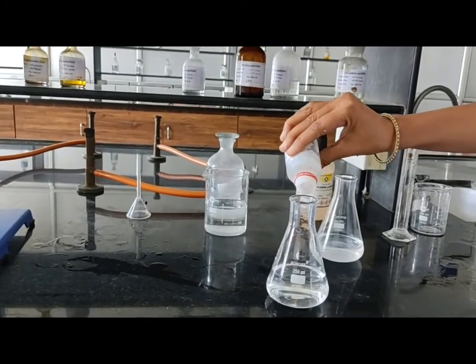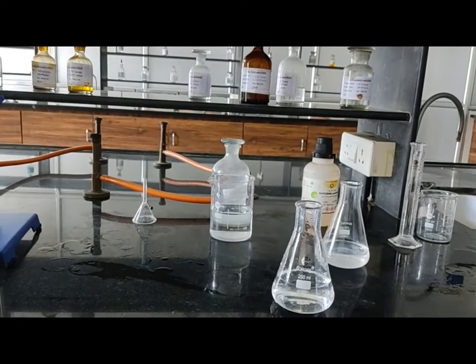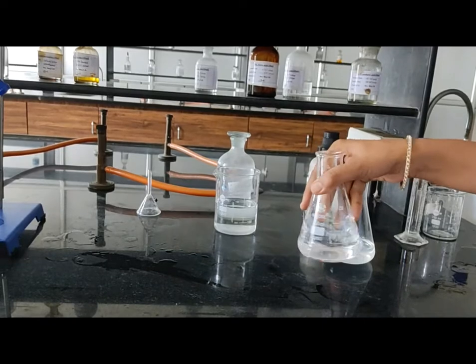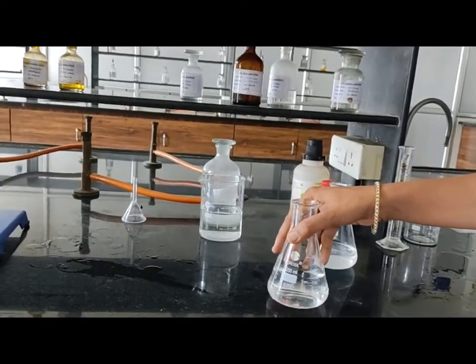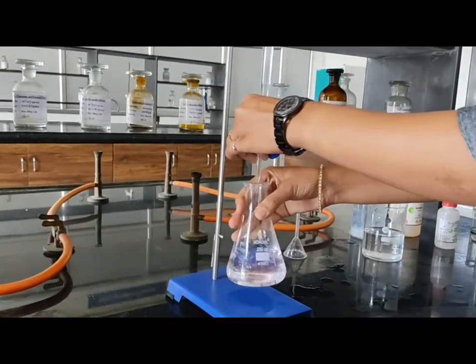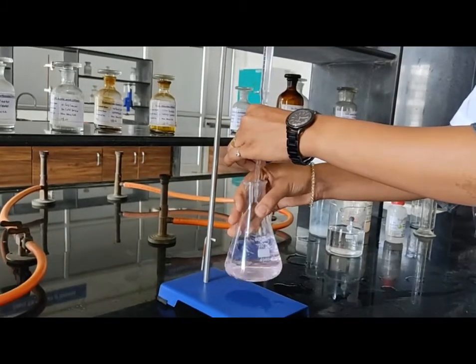Now add phenolphthalein indicator and titrate it against 1 molar sodium hydroxide solution. Titrate it with 1 molar sodium hydroxide solution.